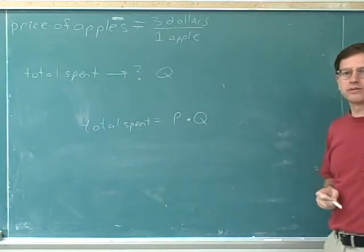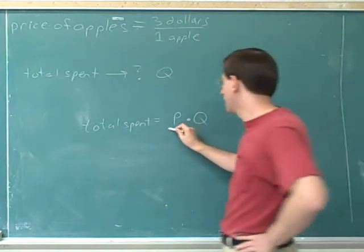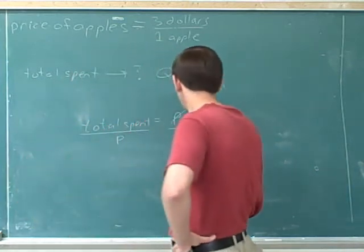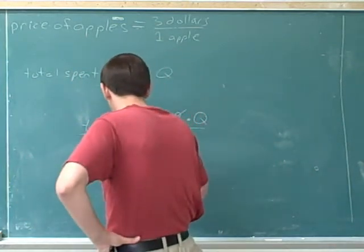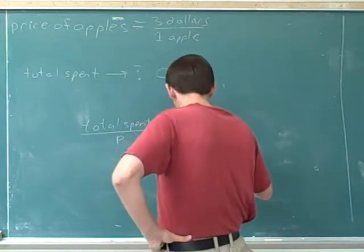Well, we have to get the Q by itself, so we would divide both sides by the price, and then the price would cancel.